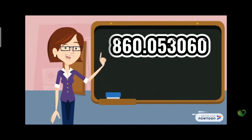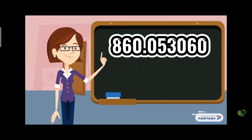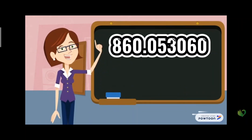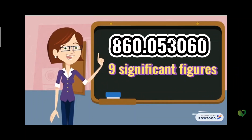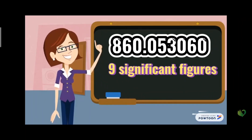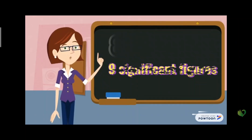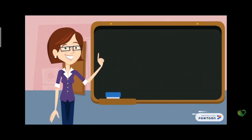For the last example, all of the zeros in between the non-zero digits are counted, and since we have a decimal point the zero to the right is also counted. So everything is counted in this example — we have nine significant figures. I hope you learned something in this video. Thank you and God bless.